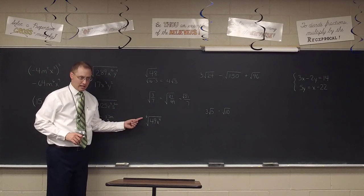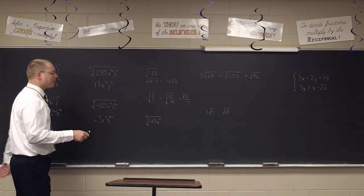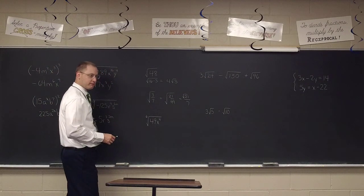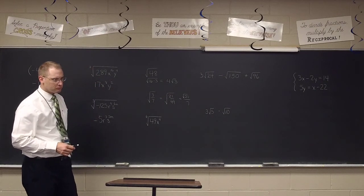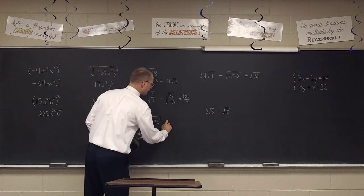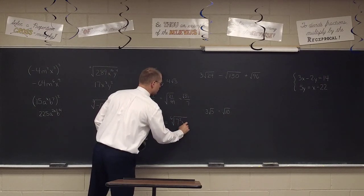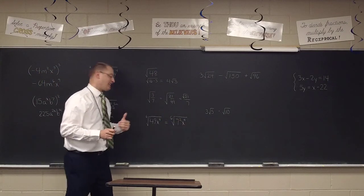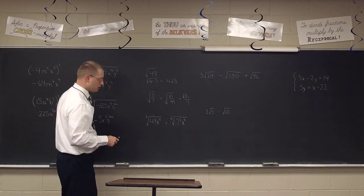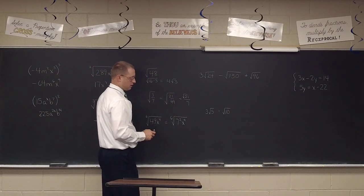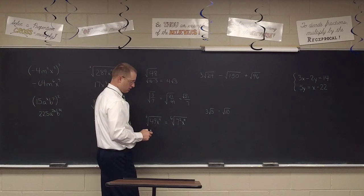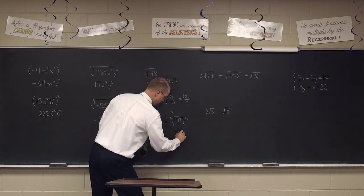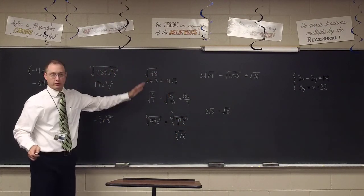Sometimes our radicals have big indexes, and we don't want big indexes. The key to simplifying a large index is to rewrite the radicand as a power. So instead of leaving it as 49, write it as 7 squared. And then x to the fourth. Once I can see all the exponents and my index, I take a 2 out of all the little numbers to get a 3, 1, and 2 — in other words, the cube root of 7x squared. Any questions on reducing radicals?